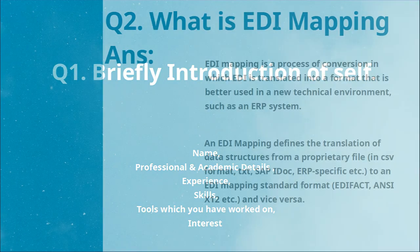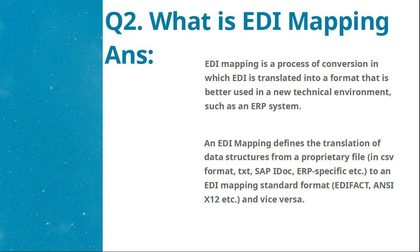The next question can be: what is EDI mapping? EDI mapping is a process of conversion in which EDI is translated into a format better used in a new technical environment such as an ERP system. EDI mapping is defined as a translation of data structure from proprietary files like CSV format, text format, SAP IDocs, ERP-specific transaction sets to an EDI mapping standard format like EDIFACT or X12, and vice versa.